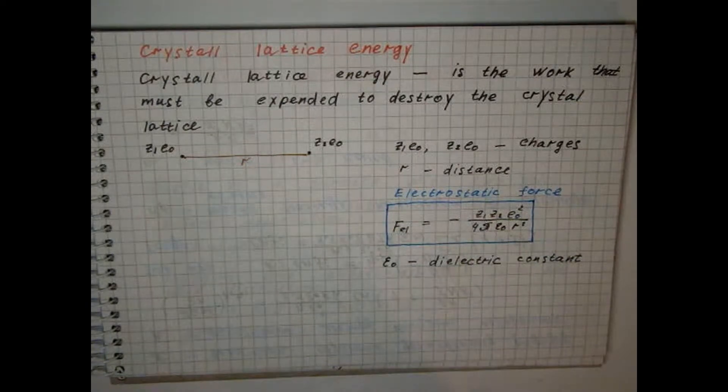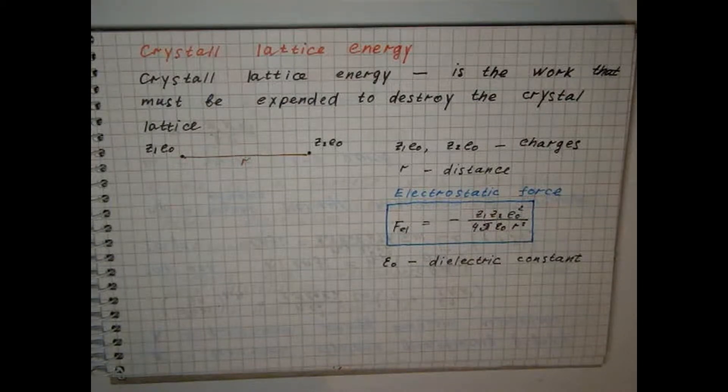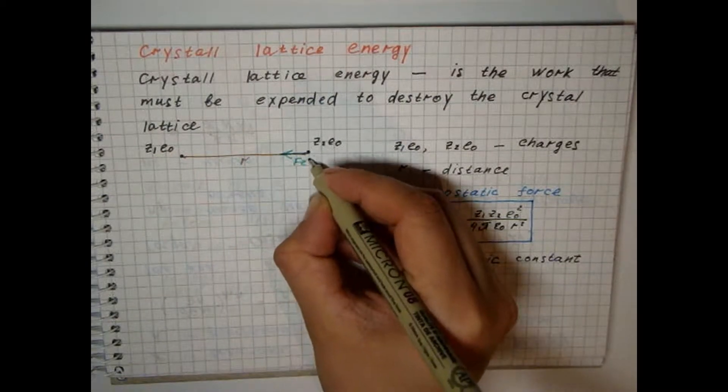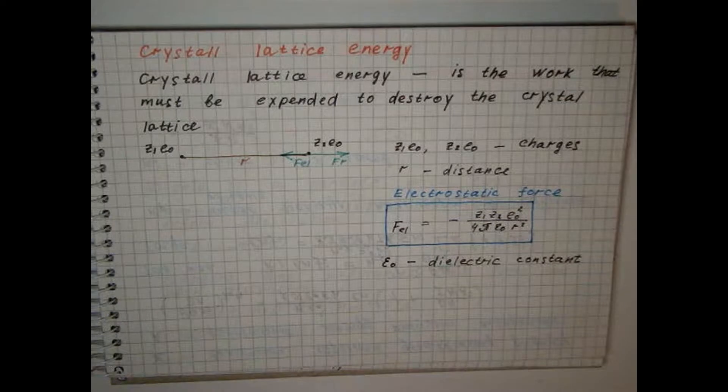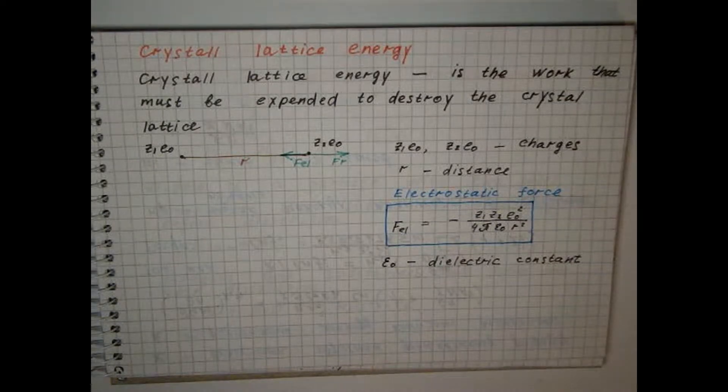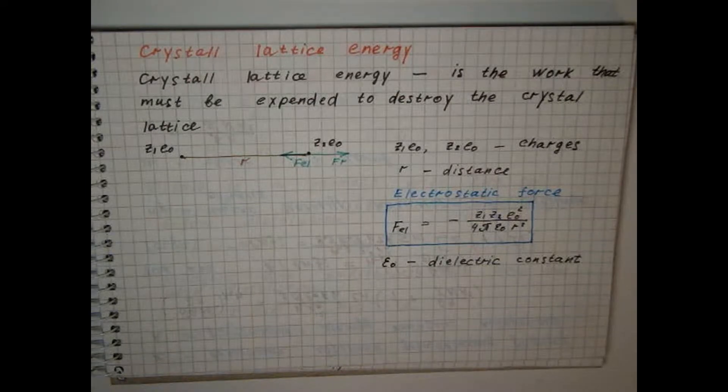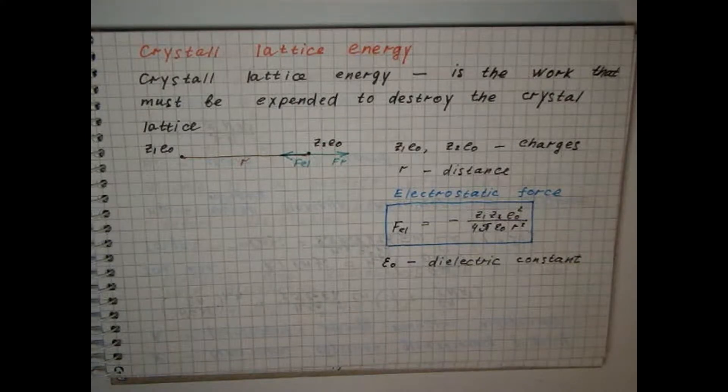The first ion is fixed in the position equal to zero and the force of electrostatic interaction acts on the second ion in the direction of the first. Since the direction of this force is opposite to the direction of the axis, it will be less than zero. At the same time, the repulsive force acts on the ions due to the interaction of the electron shells and not allowing the ions to come infinitely close to each other.